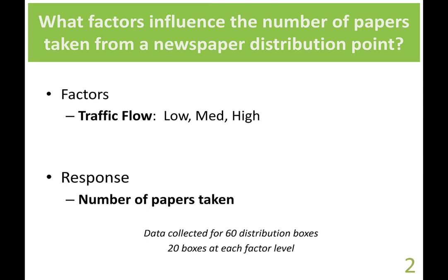In particular, we want to know what factors influence the number of papers taken from a newspaper distribution point. Our factor or independent variable is going to be traffic flow by that distribution point — is it a low, medium, or high traffic area? Our response or dependent variable is going to be the number of papers taken. We collected data from 60 different distribution points: 20 at a low traffic area, 20 at a medium, and 20 at a high.